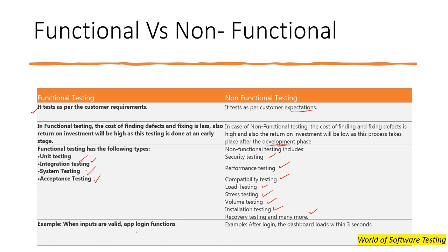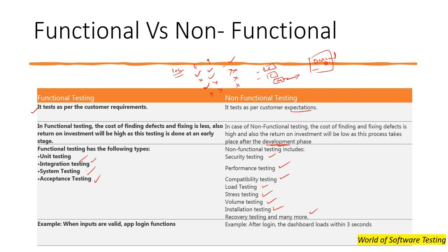An example of functional testing: when valid inputs are provided, the app login functions correctly. For the login scenario, valid email and password should result in login; otherwise for invalid inputs it should not log in. An example of non-functional testing: after logging in with valid credentials and clicking the login button, the dashboard should load within three seconds.